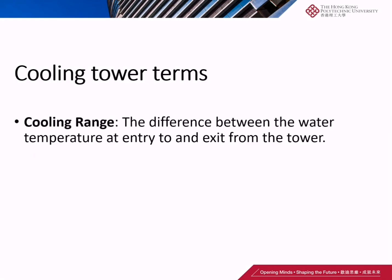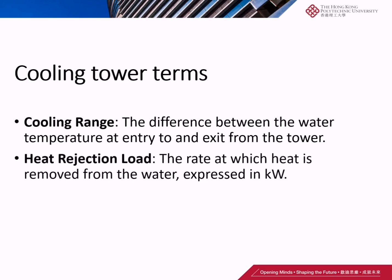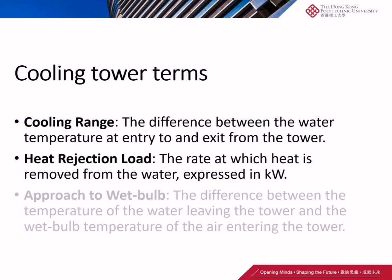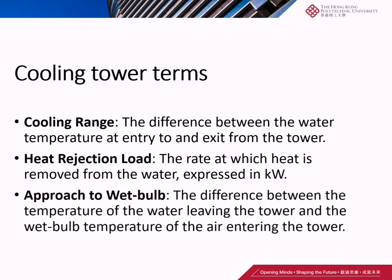There are some cooling tower terms worth mentioning. Cooling range is the difference between the water temperature at the entry to and the exit from the tower. Heat rejection load is the rate at which heat is removed from the water, expressed in kilowatts. Approach to wet bulb is the difference between the temperature of water leaving the tower and the wet bulb temperature of the air entering the tower.